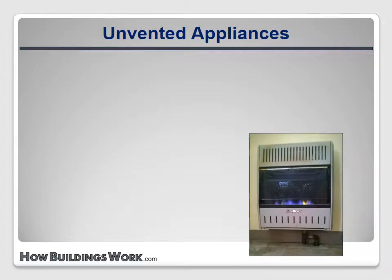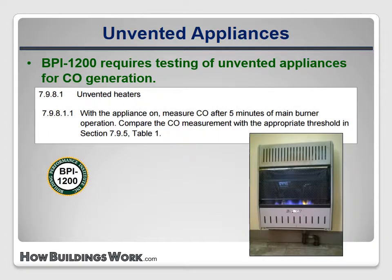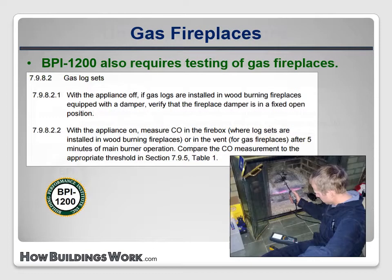While the BA Standard simply requires that no unvented appliances operate in the living space, BPI 1200 requires testing of these appliances to determine if they require repair or removal. BPI 1200 also requires that gas fireplaces be tested for carbon monoxide generation — including both fireplaces manufactured to burn gas and wood fireplaces with a gas log set installed. For these fireplaces, as well as for unvented heaters, testing is to be done after five minutes of operation.